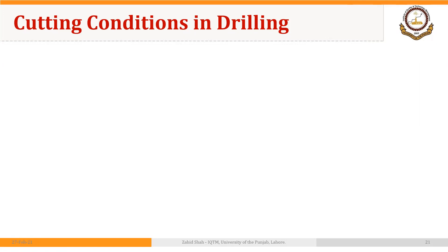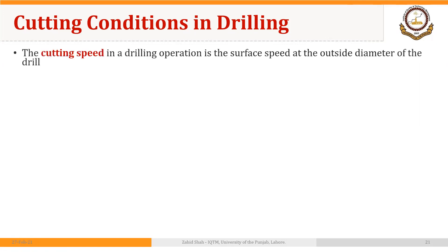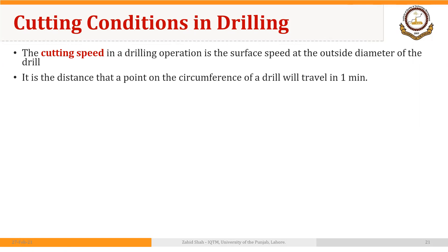Welcome back. In this session, we will discuss cutting conditions in drilling. The cutting speed in a drilling operation is the surface speed at the outside diameter of the drill. It is the distance that a point on the circumference of a drill will travel in one minute. You might recall from our discussion on turning that in turning, the spindle RPM was transferred to the workpiece. In the case of drilling, the spindle RPM is transferred to the twist drill.